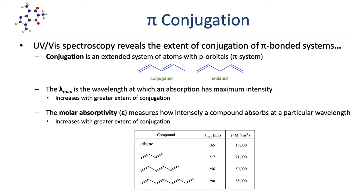UV-Vis spectroscopy can be used to help determine the extent of conjugation in a molecule. The intensity of any absorption is the molar absorptivity, and molar absorptivity also increases with an increase in conjugation.